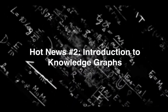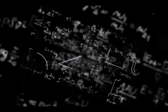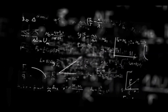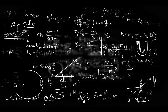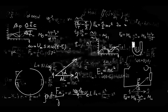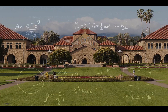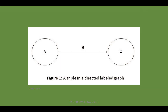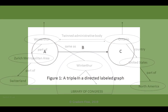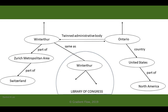Knowledge graphs, or KGs, are often used to represent information extracted from natural language processing and computer vision. A recent Stanford AI lab post by Vinay Chowdhury and team provides an overview of KG terms and concepts, and recent applications within AI.